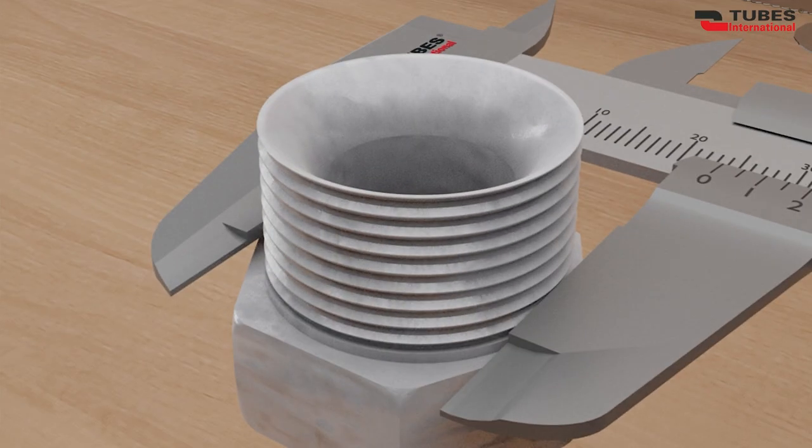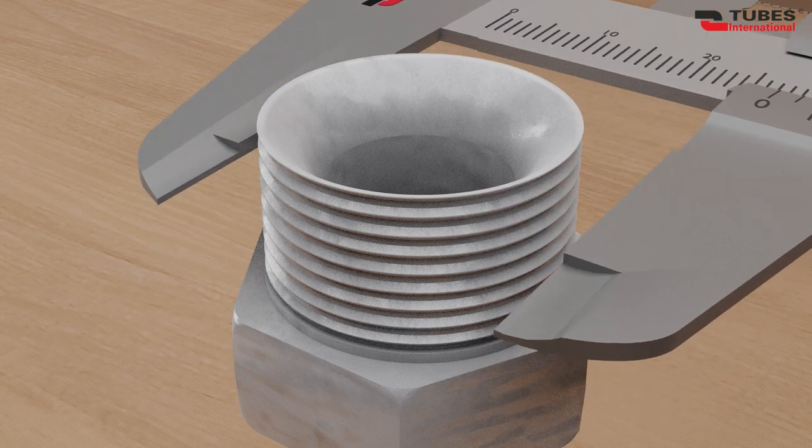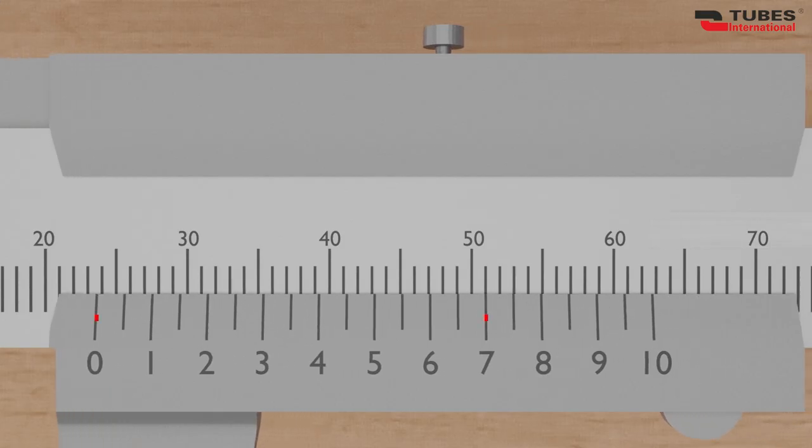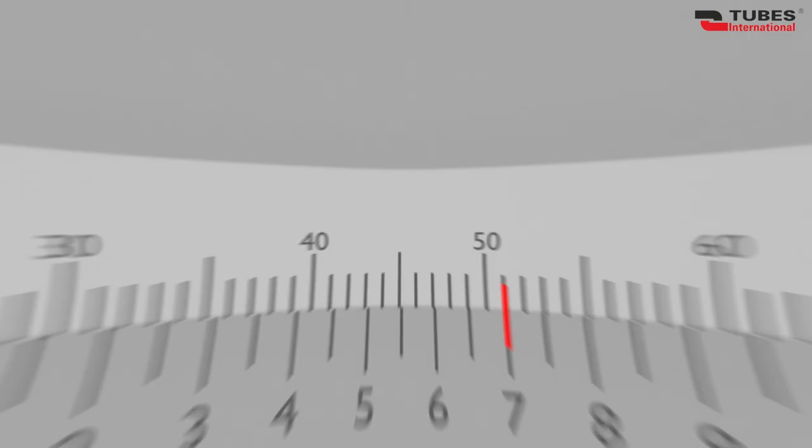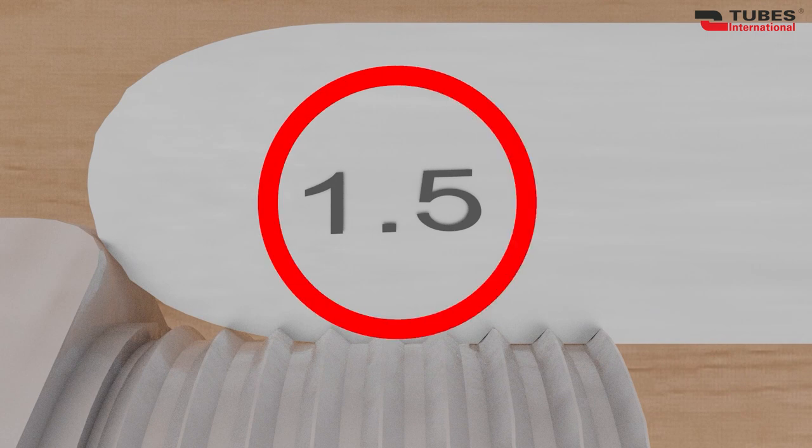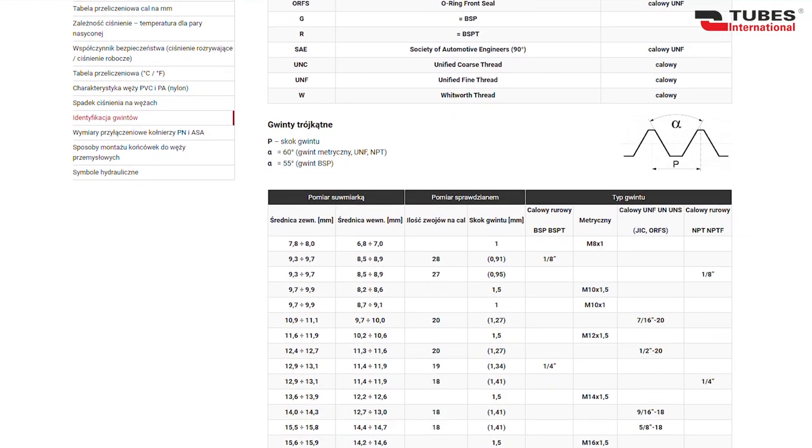Let's check another thread. As in the previous case, measure the thread at multiple points. We can see that the diameter reads 23.7 mm across all measurements. Now let's select the appropriate gauge. On the gauge, a value of 1.5 is displayed.